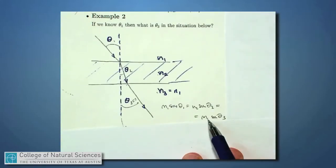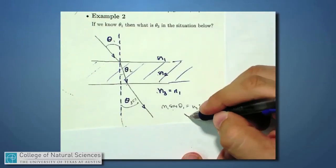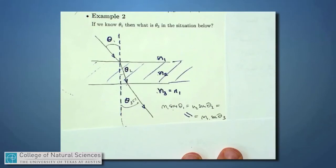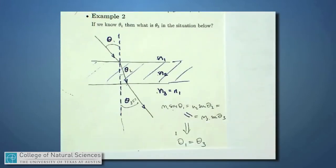And if I say that N3 is the same as N1, then not only is this equal to that and that is equal to that, but then this is equal to my final step, N1 sine theta1 is equal to N1 sine theta3. And notice if I just divide both sides by N1, then I have sine of theta1 equals sine of theta3, or in other words, the light exits the slab at exactly the same angle as it entered the slab.